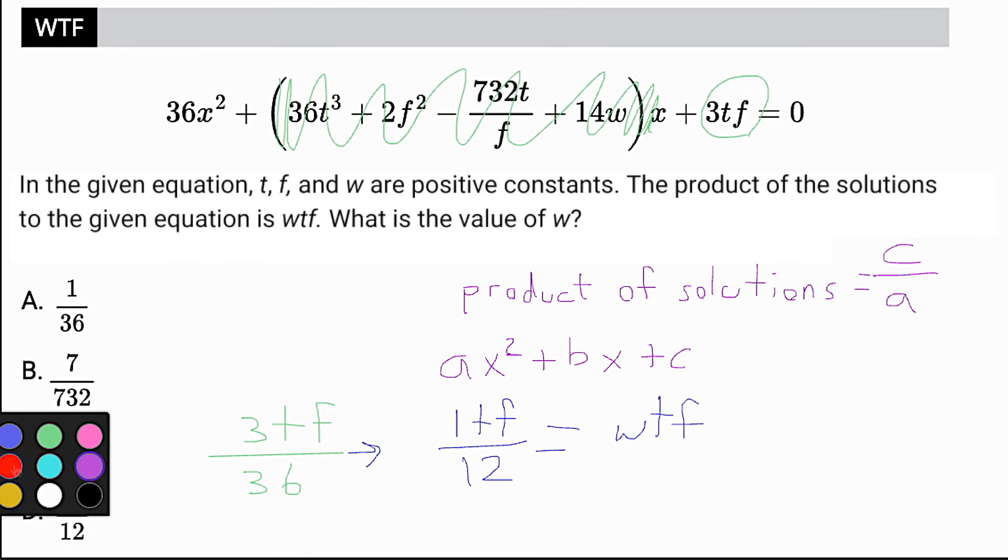If we eliminate, we have TF on both sides in the numerator, so we can eliminate that, and then W equals 1 over 12. Choice D is my answer.